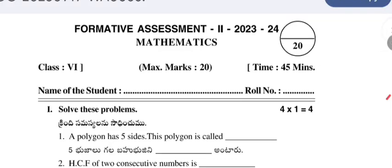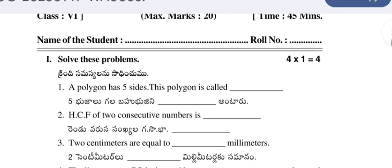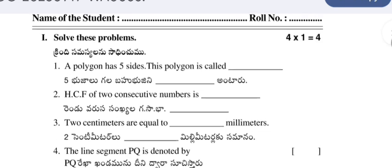Hello, welcome to my YouTube channel. Today's video is about the Formative Assessment 2, 2023-24 question paper of mathematics for class 6th. Maximum marks 20 and the time duration was 45 minutes. Solve these problems. Four questions are given, each one carries one mark.